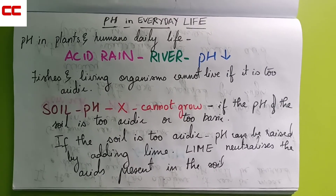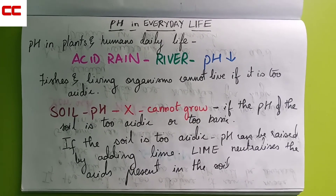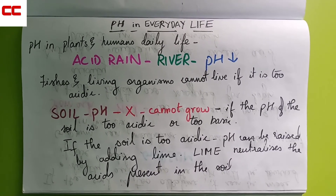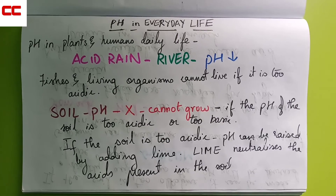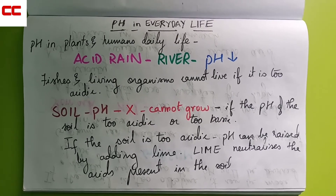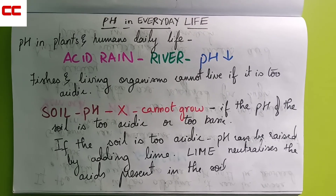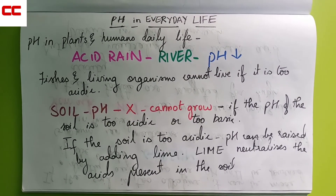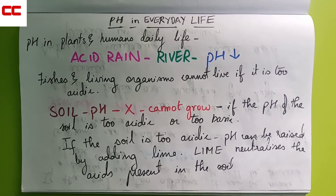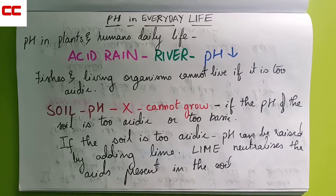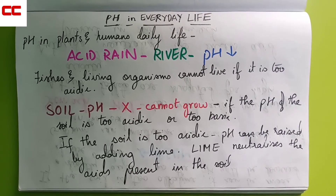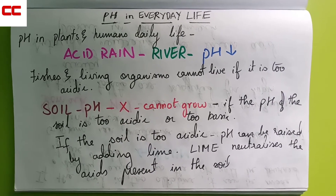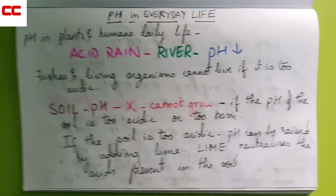Regarding soil pH, plants cannot grow if the pH of the soil is too acidic or too basic. The pH should not be too acidic nor too basic. If the soil is too acidic, we can raise the pH by adding lime, because lime neutralizes the acids present in the soil — it balances the effect of the acids present in the soil.